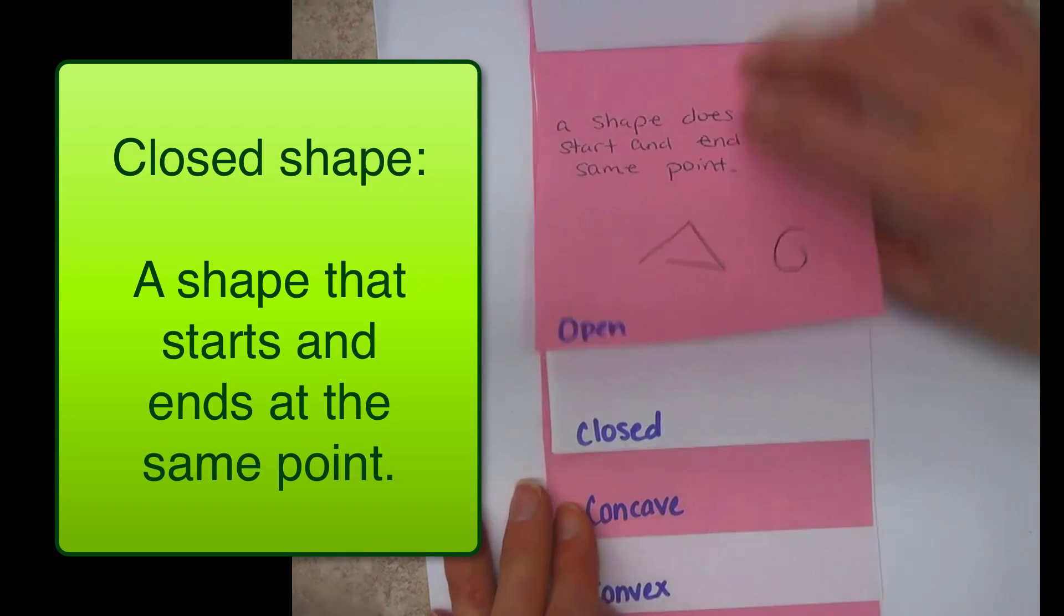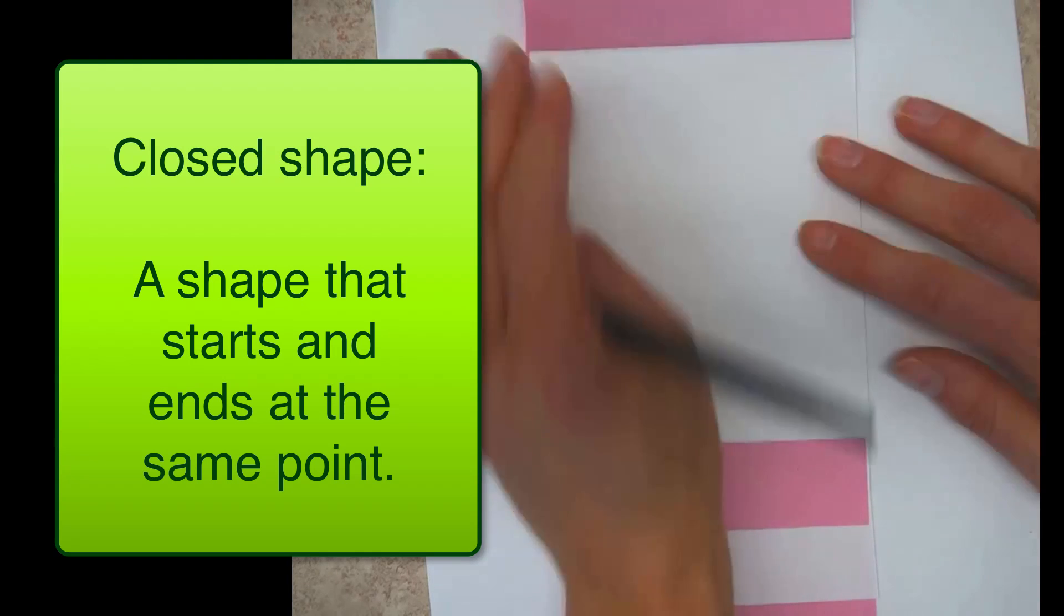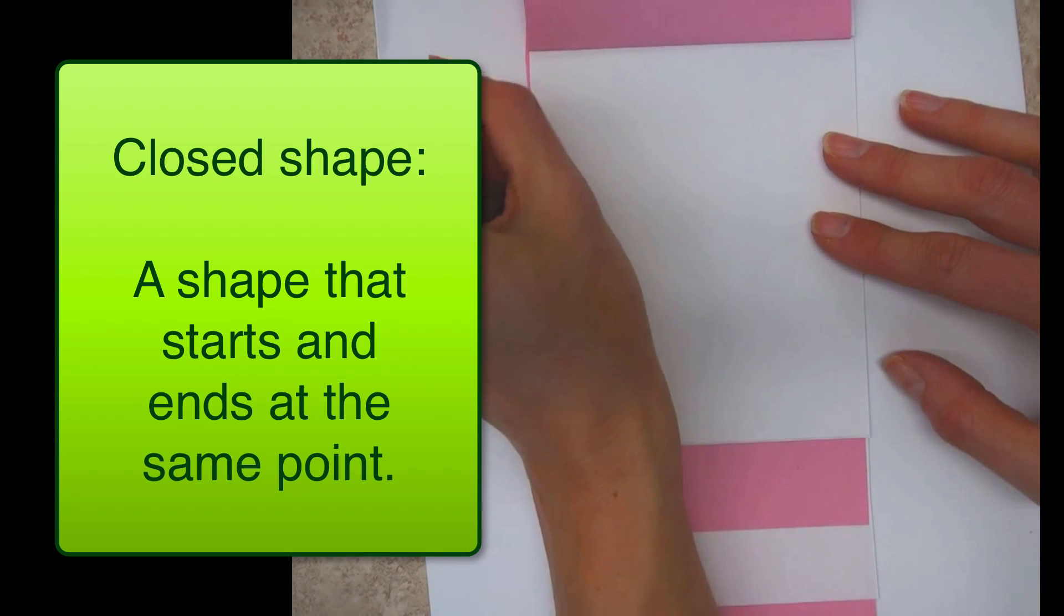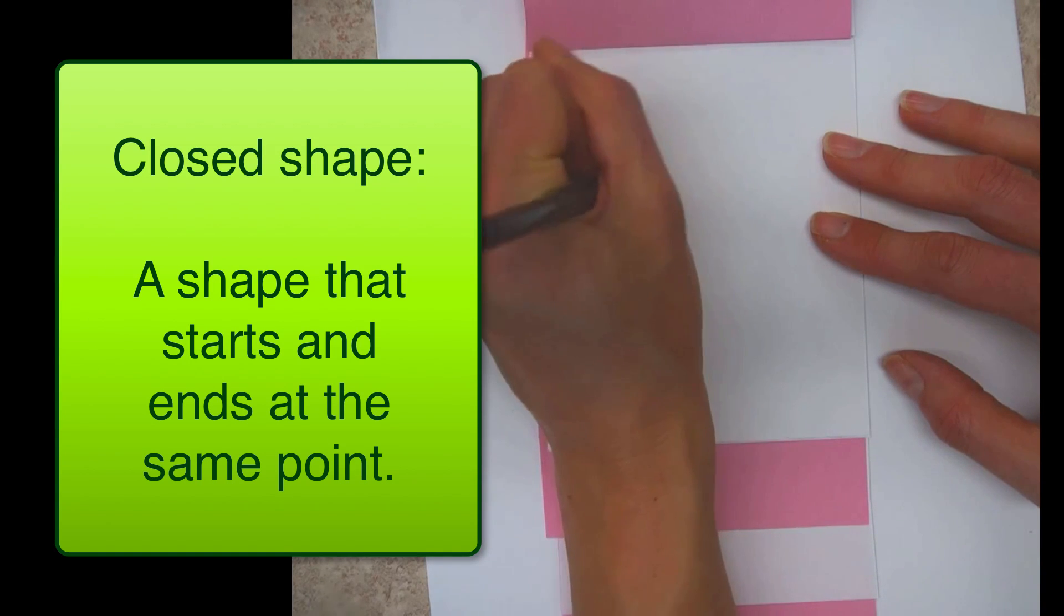And then a closed shape would be the opposite. It's what you mostly would think of. So a closed shape is a shape that starts and ends at the same point.